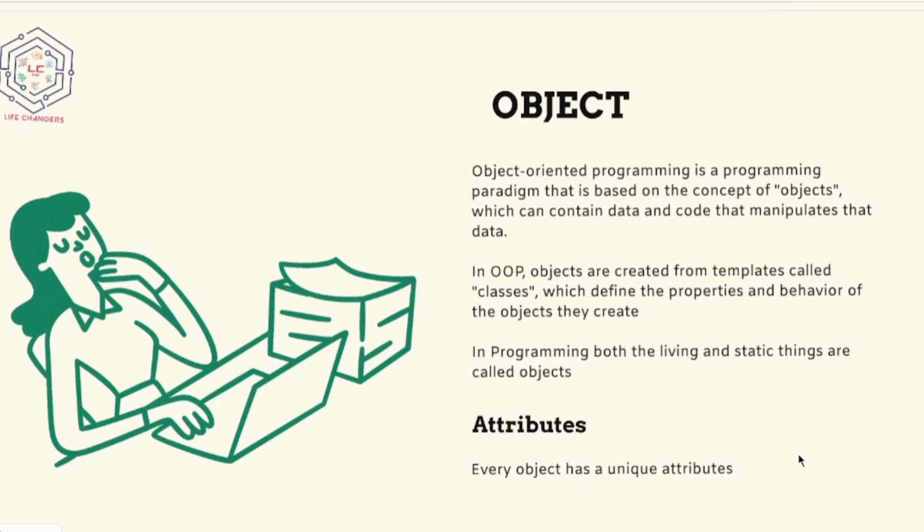Coming to the attributes, every object has unique attributes. This means there are so many people around you. How do you identify them? They look different. Some are taller, some are stronger, some are skinny, some are healthier.